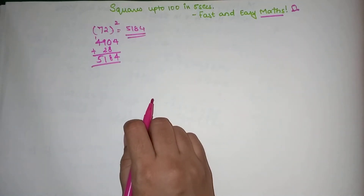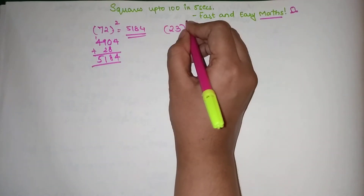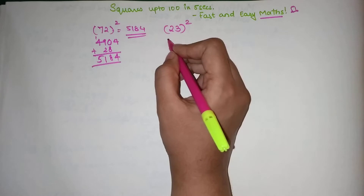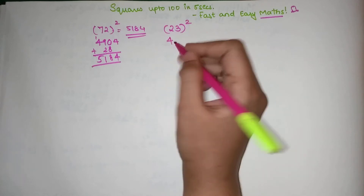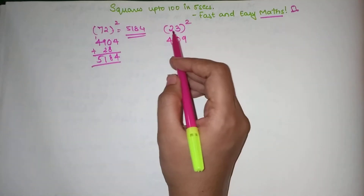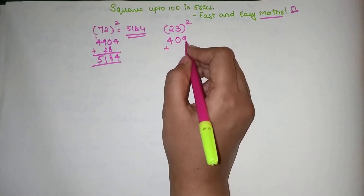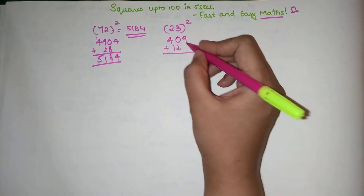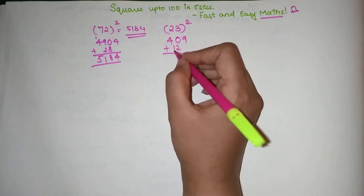Now let's find the square of 23. The square of the first digit 2 is 4, written as is. The square of the last digit 3 is 9, but in two-digit form: 09. Then multiply all digits: 2 × 3 = 6, and 6 × 2 = 12. Add 12, leaving the last digit as is: 9 stays, 0 + 2 = 2, and 4 + 1 = 5.